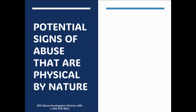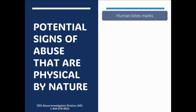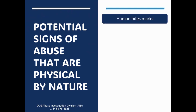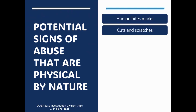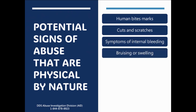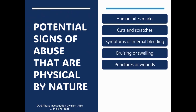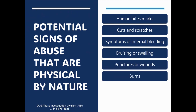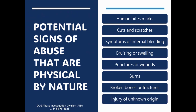Some examples that someone has been physically abused could be human bite marks, cuts or scratches, symptoms of internal injury, bruising or swelling, punctures, burns, broken bones or fractures, and any injury of unknown origin.